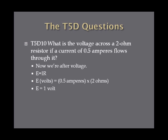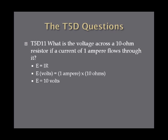What is the voltage across a 2 ohm resistor if a current of 0.5 amperes flows through it? We're looking at voltage, so E equals IR. E in volts equals 0.5 amperes times 2 ohms, which gives 1 volt. Next: What is the voltage across a 10 ohm resistor if a current of 1 ampere flows through it? E equals 1 ampere times 10 ohms, so E equals 10 volts. Finally: What is the voltage across a 10 ohm resistor if a current of 2 amperes flows through it? E equals 2 amperes times 10 ohms, so E equals 20 volts.